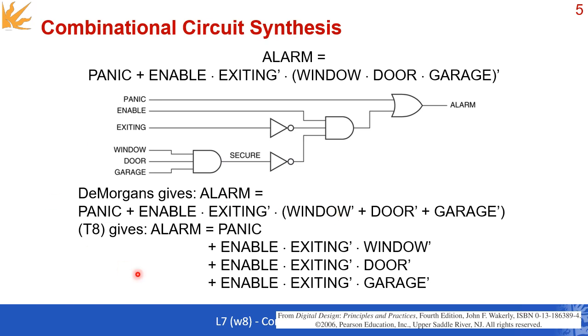Now the next thing to do is use distributivity, which is going to allow you to convert the function from what is here to what you see over here. So the ALARM is PANIC or ENABLE and not EXITING and not WINDOW. So we are using distributivity here again, and then again we are using distributivity: ENABLE and EXITING and GARAGE.